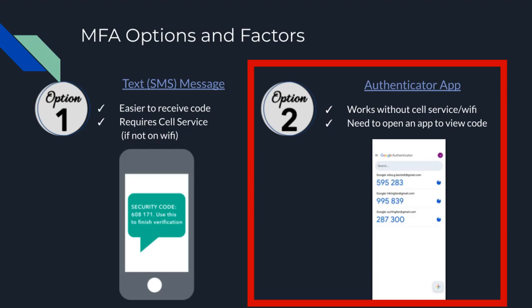While you will still be using your cell phone, the authenticator app can be opened and it will give you a code that can be used to log on to ClassLink. This option does not require you to have cell service — you will just need service to set it up, but that's it.